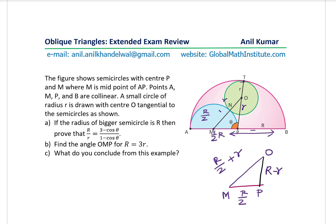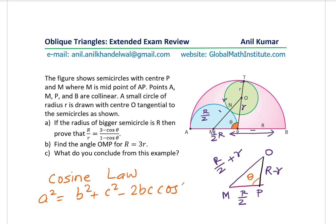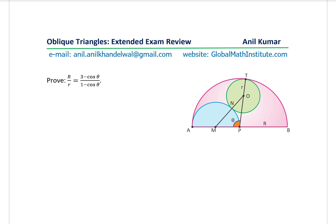So the three sides of the triangle have been defined, and the angle of interest is θ. Since all three sides are given, we'll use the cosine law, where a² = b² + c² − 2bc·cos A. That should help us relate all these radii, and once we do that we should be in a position to get this ratio. So that is our approach. I'd like you to pause the video at this stage and try to prove the identity yourself.